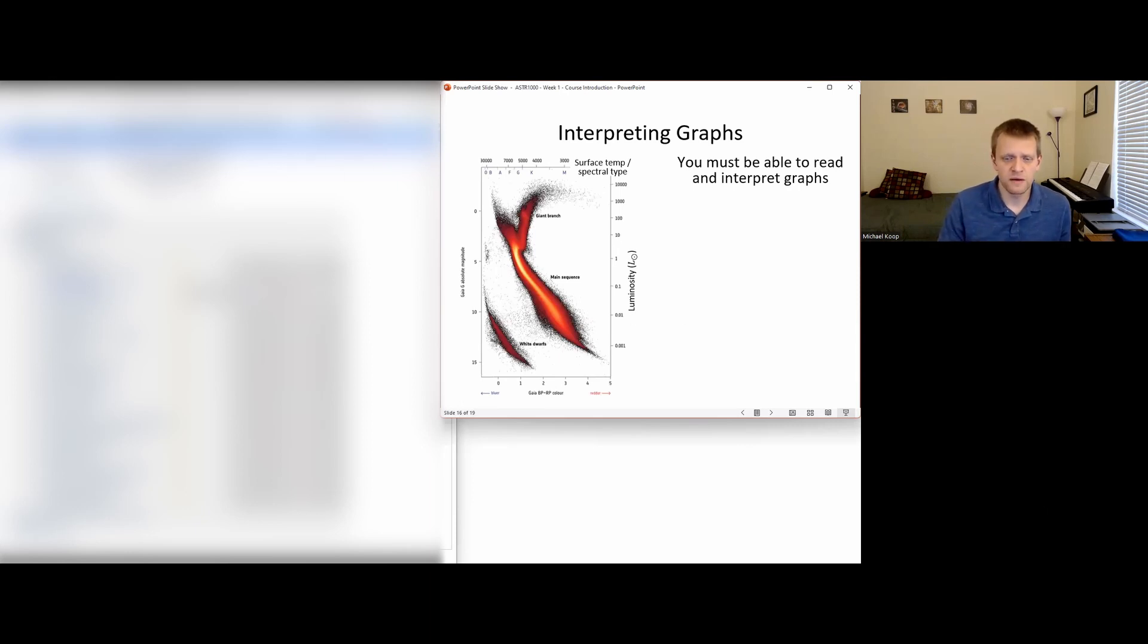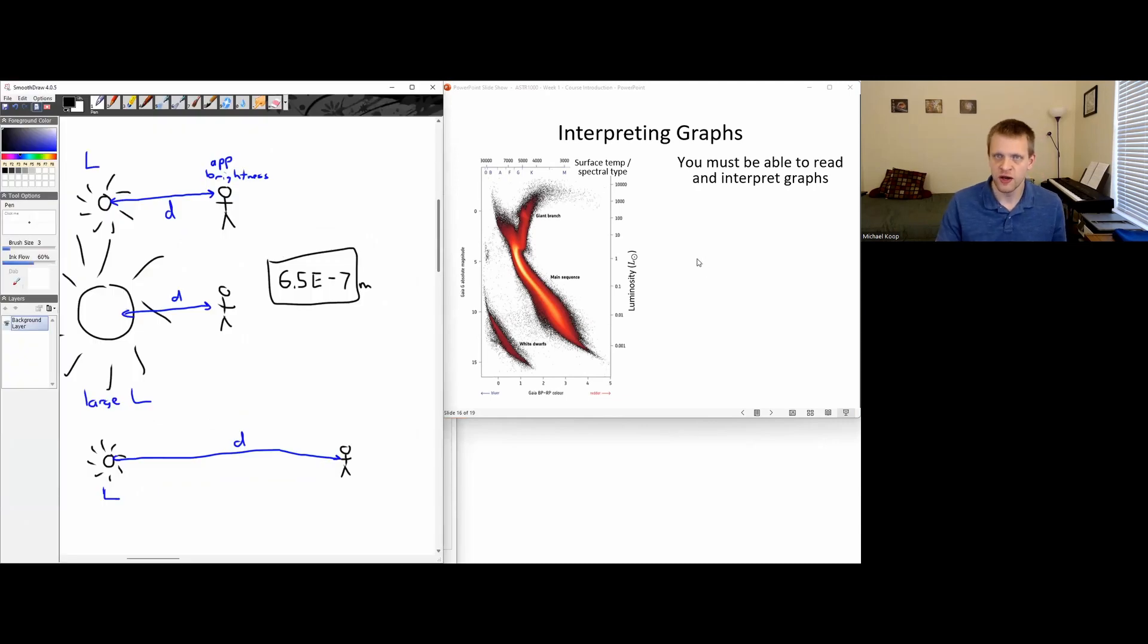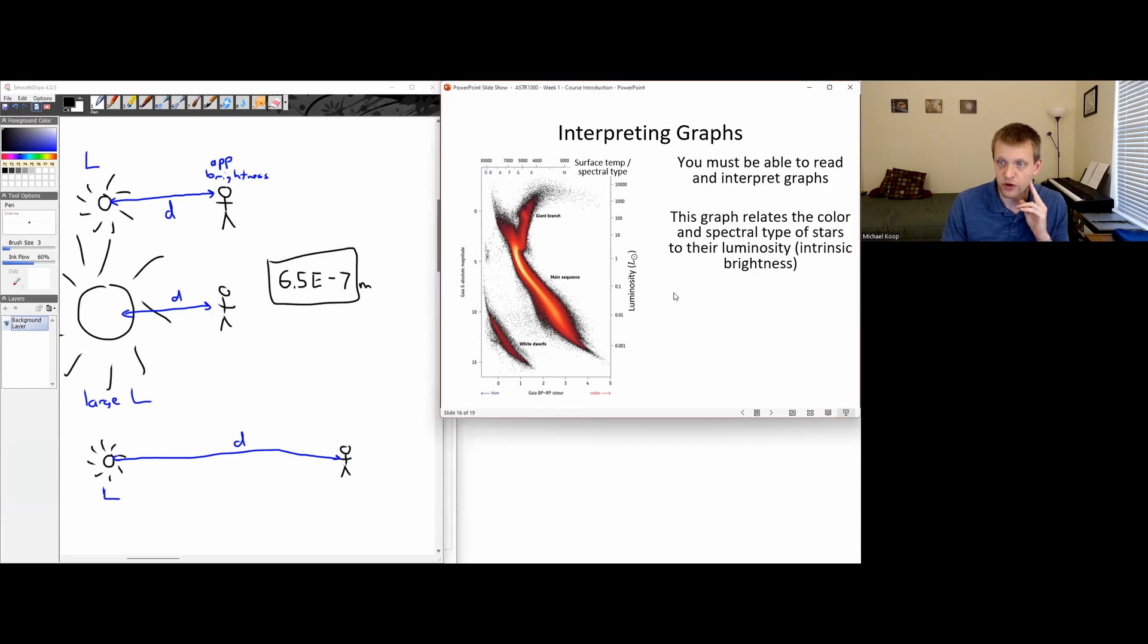A couple other things to mention. Throughout the course, we're going to be looking at a lot of different kinds of graphs. Being able to read and interpret those graphs is going to be very important. For example, this is a graph that we're going to be looking at quite a bit that relates basically the color of a star, and we'll talk about how that's particularly measured, to their luminosity. It turns out that there are some very distinct patterns of what types of stars have what luminosities and what surface colors to them. This shows us that there are some patterns in this data that tell us a lot about how stars form, about how stars evolve, stellar life cycles.